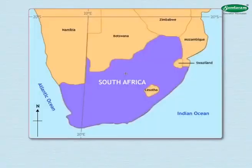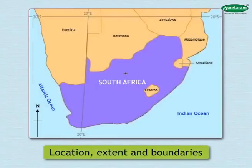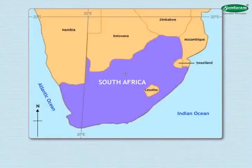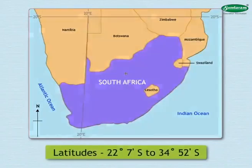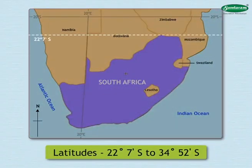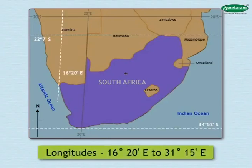Let us study the location, extent and boundaries of this country. South Africa extends from 22 degrees 7 minutes south to 34 degrees 52 minutes south latitudes, and from 16 degrees 20 minutes east to 31 degrees 15 minutes east longitudes.